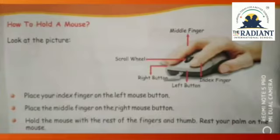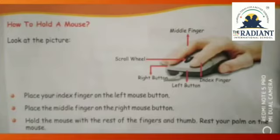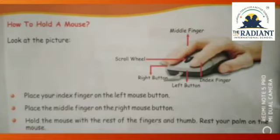Now look at the picture. Our first finger — the index finger — should be on the left button. The other side is the right button. In between is the scroll wheel. The middle finger should be on the right button. Your thumb should hold the mouse, and the rest of the fingers on the right side. Place your index finger on the left mouse button, place the middle finger on the right mouse button, hold the mouse with the rest of the fingers and thumb, and rest your palm on the mouse. Hold it properly — then only you can move the mouse properly and select items correctly.